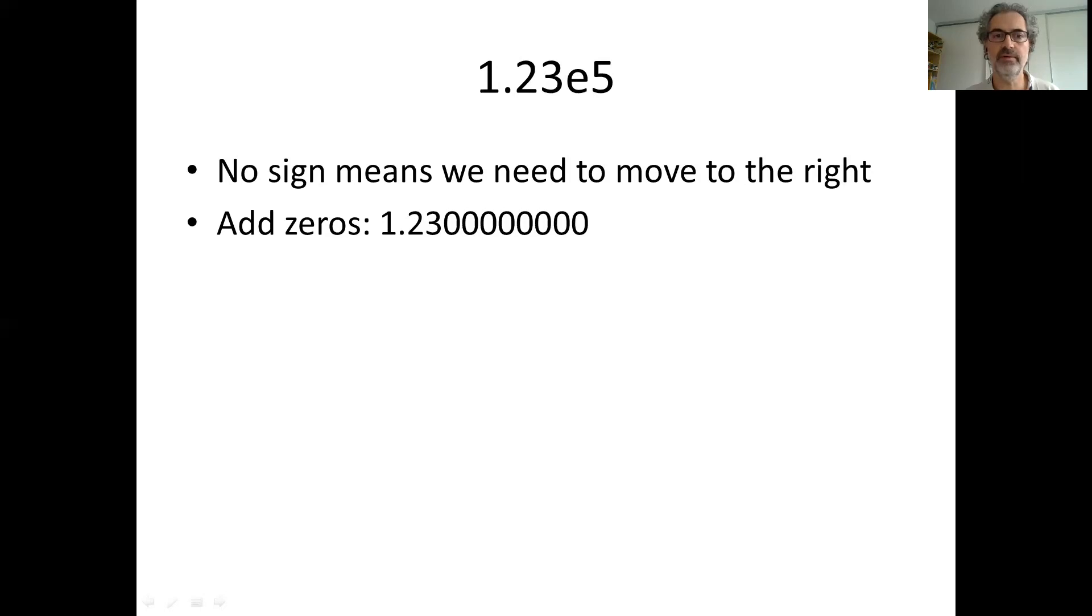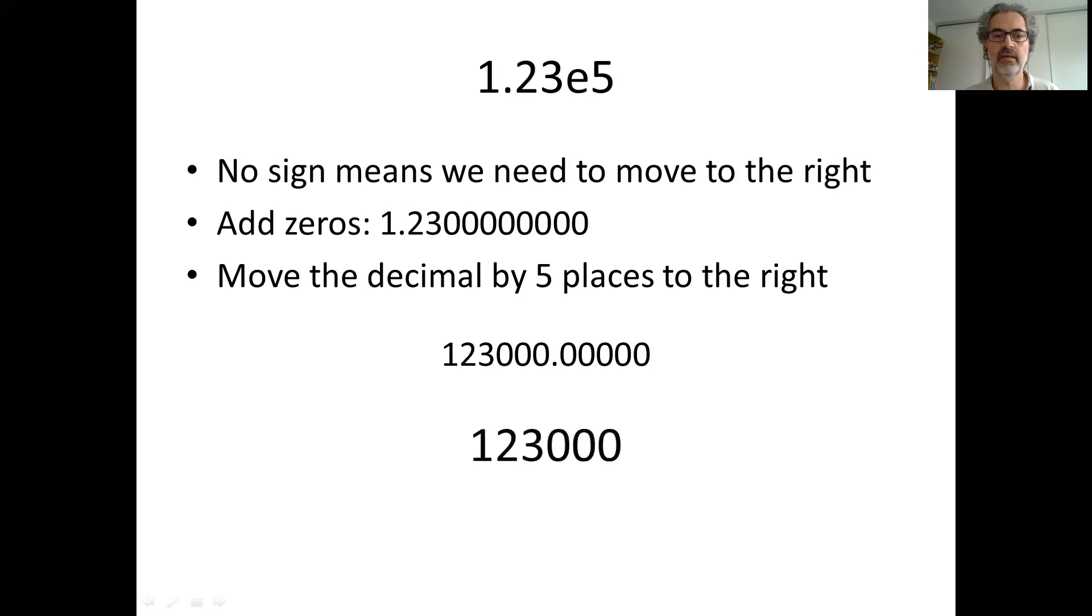So the first thing we can do is add a bunch of zeros so that we have enough. This doesn't change our number—it's still the same number written this way—but then we're going to start moving. So we have to move the decimal point by five places to the right. So we start with this one, which is the same, and then we move 1, 2, 3, 4, 5. This is our number. We discard the unneeded zeros, so any zeros after the decimal point we throw out, and this is it.